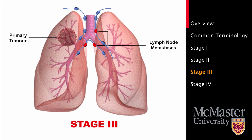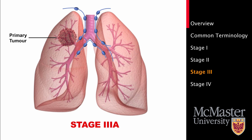Stage 3 cancer is also known as locally advanced disease. It is when the cancer has spread beyond the lymph nodes on the same side of the chest, and it has two subtypes. Subtype 3a is when the primary tumor spreads to lymph nodes located in the center of the chest cavity. Subtype 3b is when the primary tumor spreads to lymph nodes located on the opposite side of the chest cavity. Most cancers in this stage will be considered inoperable, and a combination of radiotherapy and chemotherapy will be used as treatment.